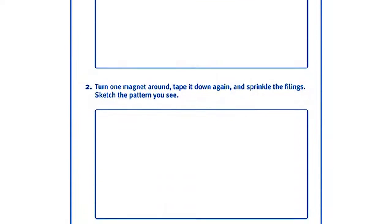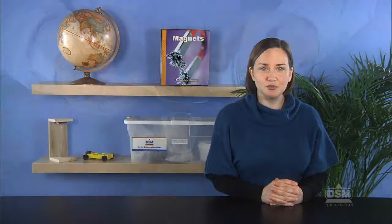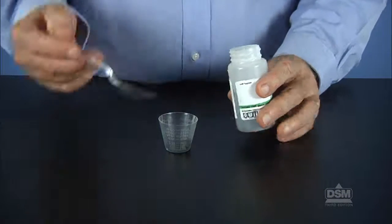To prepare for this activity, make a copy of Activity Sheet 4, Parts A and B for each student. For each team of two students, place about one half teaspoon of iron filings into a plastic cup.